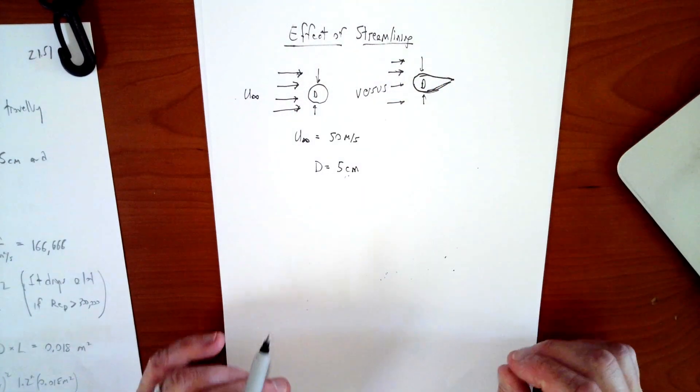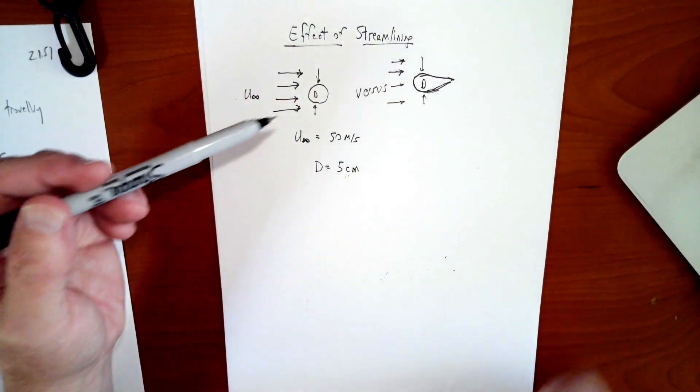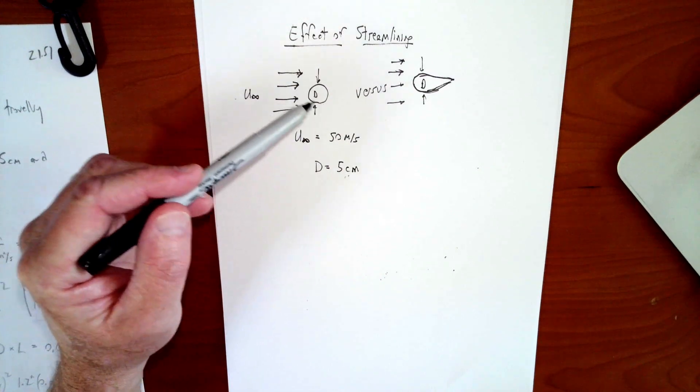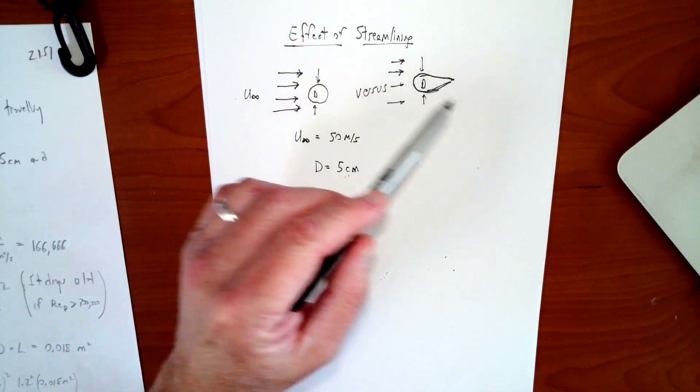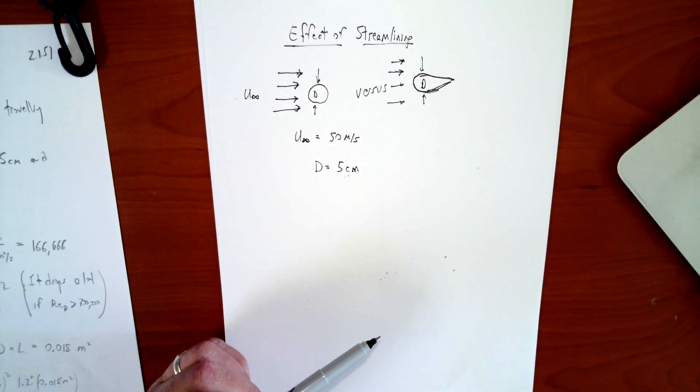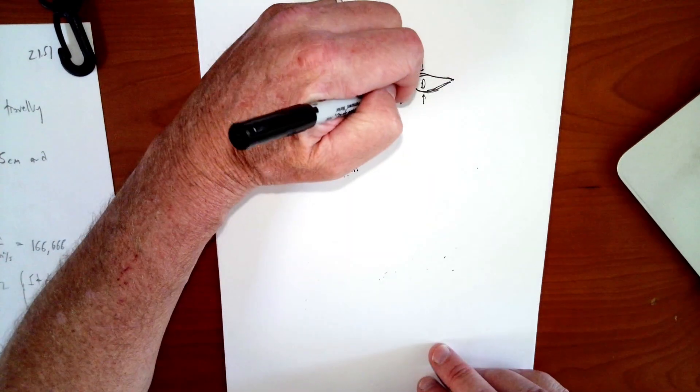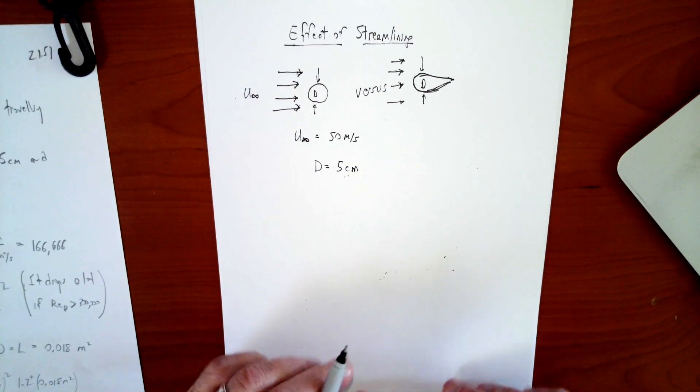But obviously one of these is circular. So we know that if it's a high Reynolds number above, I think we said 30,000, it's going to have flow separation. And the other one we're hoping is shaped in such a way that will encourage streamlining. So the streamlines will stay close to the object and will not cause flow separation, which we believe reduces friction.